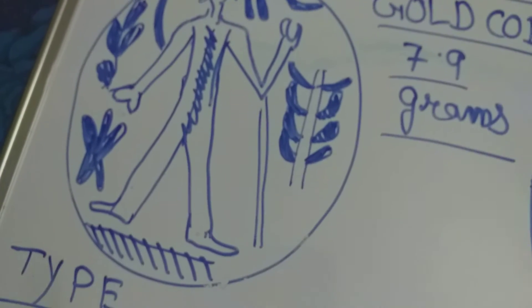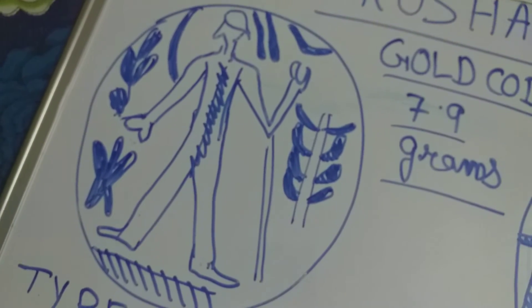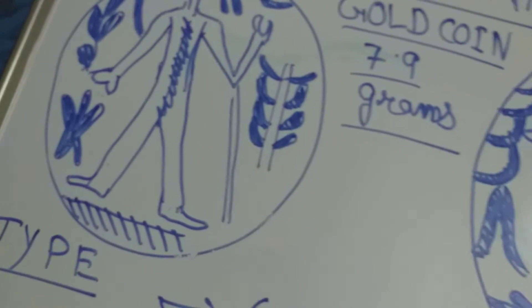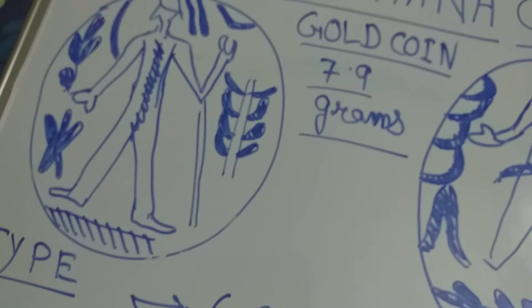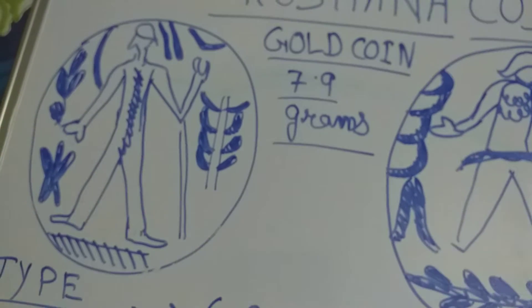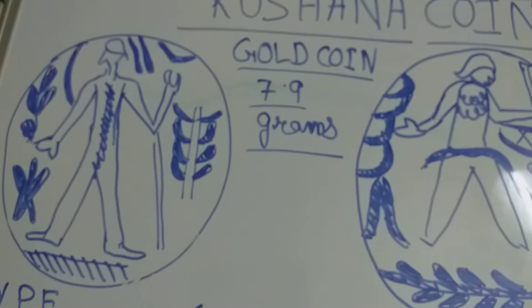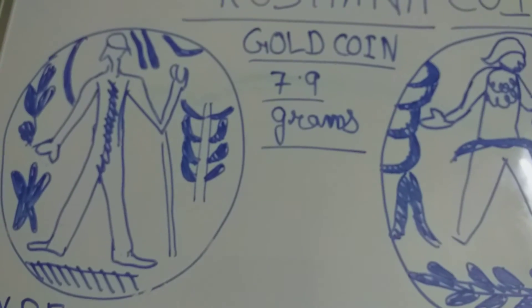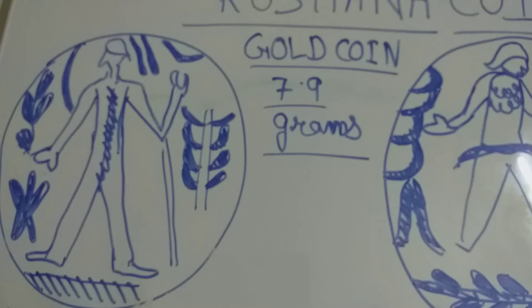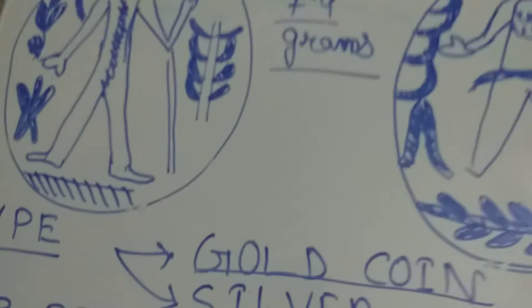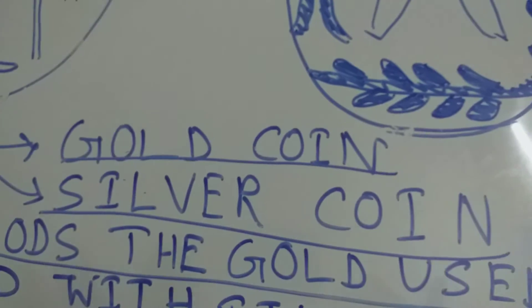These are all the designs on the coin, and there are lots of scripts on it. If you search on Google for Kushana coins, you can see lots of script on them.